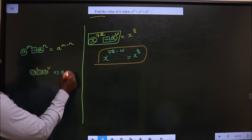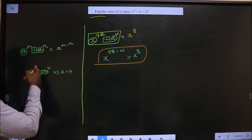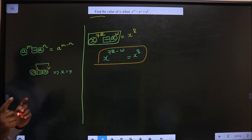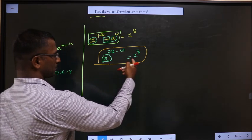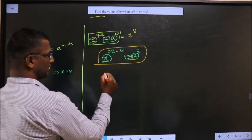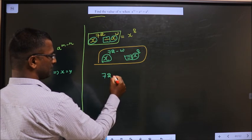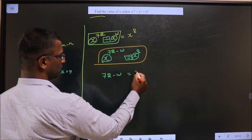So x equal to y. Bases are same and equal, so that means the powers also have to be same. Here also the bases are same and equal, so equate the powers. So 72 minus W equal to 8.